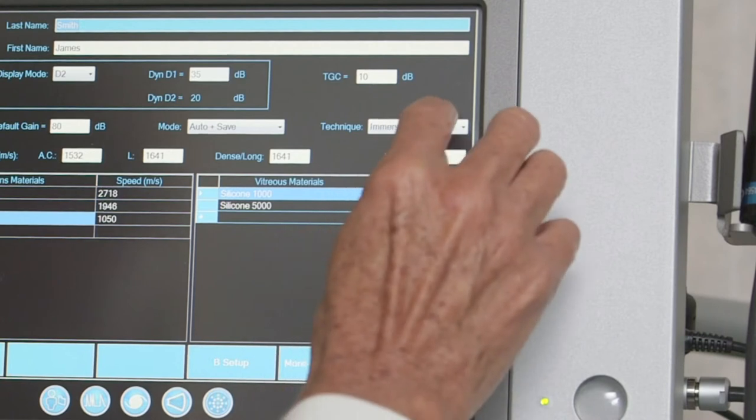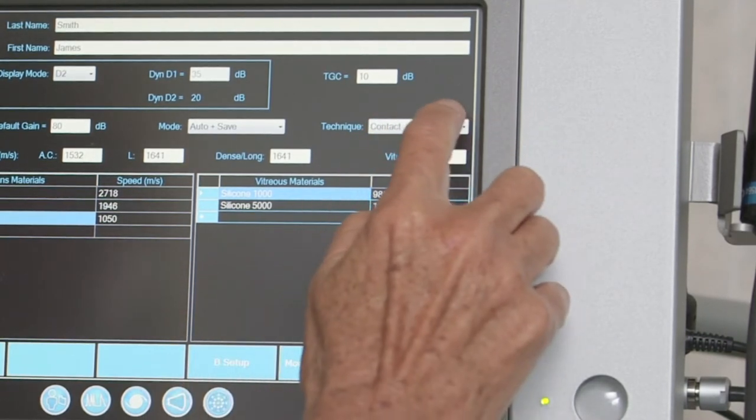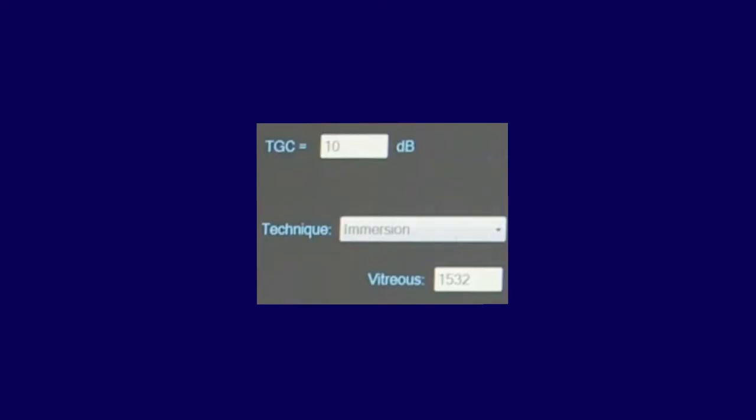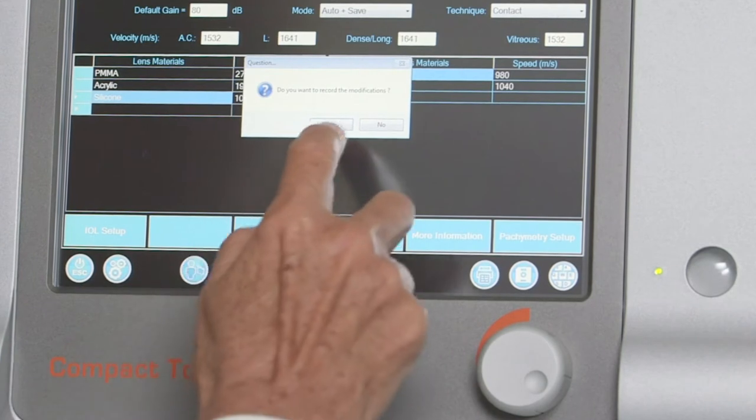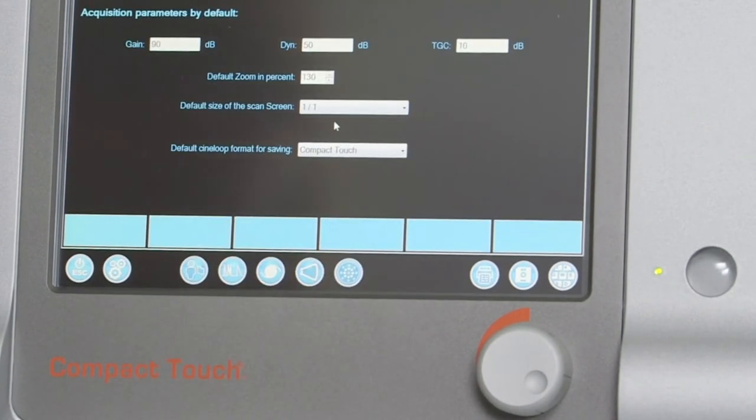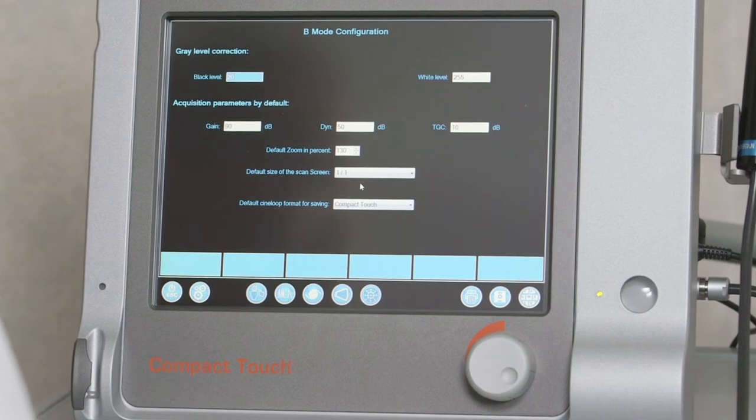Next, in the Technique field, choose Contact to use the A-scan probe for applanation scans, and Immersion to use the probe with a scleral shell and coupling medium. To enter or modify parameters for the use of a B-scan probe, select B-setup from the blue toolbar. Parameters include Gray Level Correction, Gain, Default Zoom, Default Size of the Scan screen, and Default Format for saving CineLoop sequences.